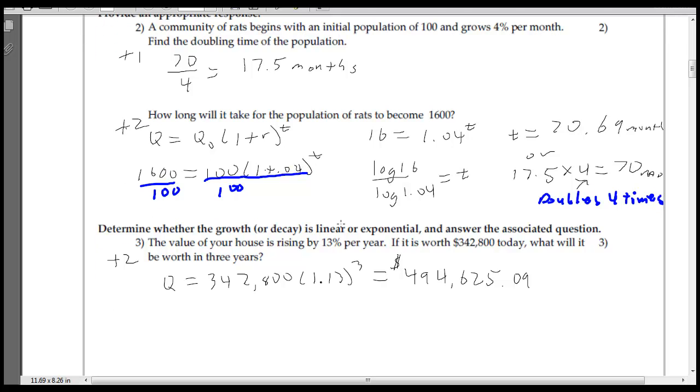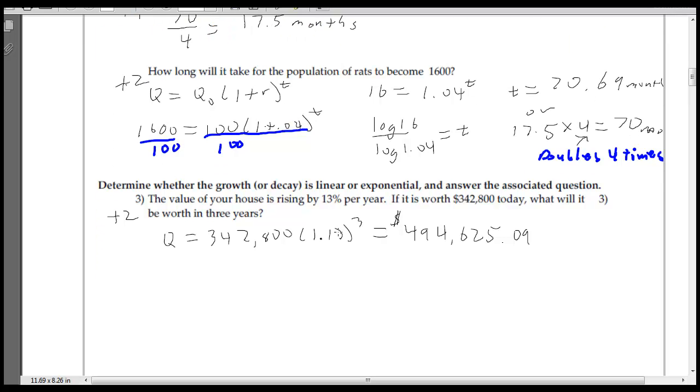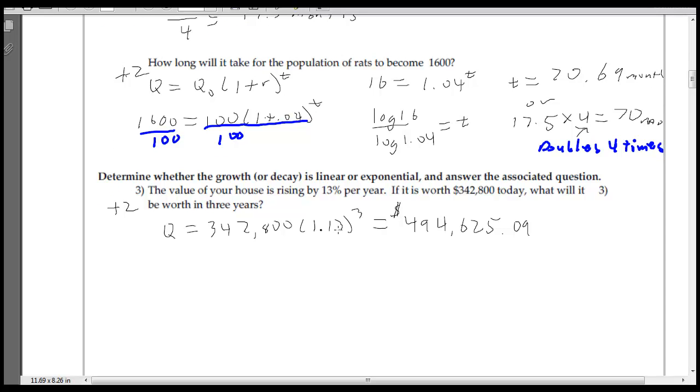So number 3, 13% per year, will it be worth in 3 years? So you see, again, 1 plus 0.13, there it is, 1.13 to the third power. So it's really multiplying times 1.13 three times. So the house in the future will be worth $494,625.09.